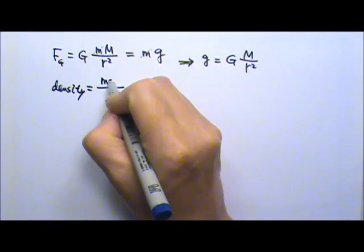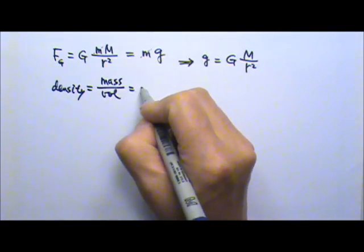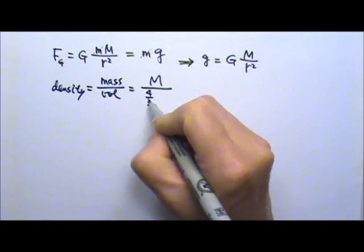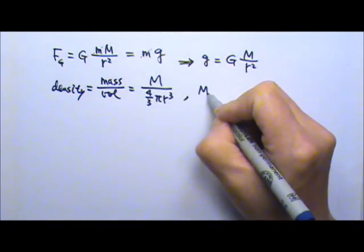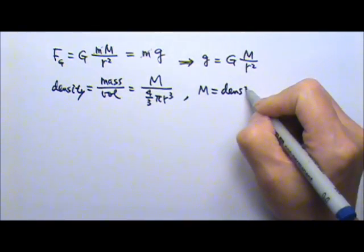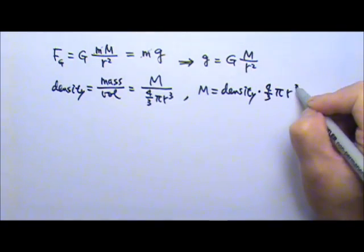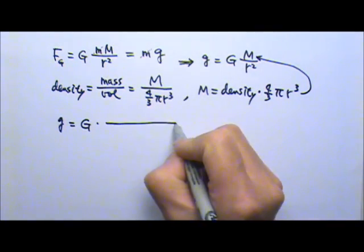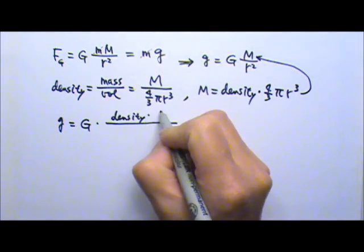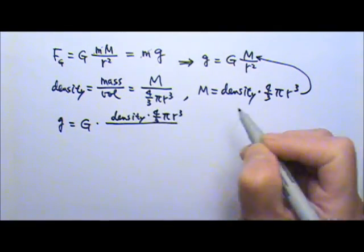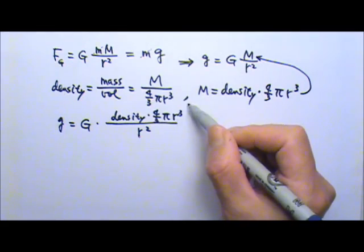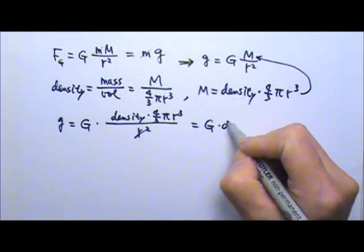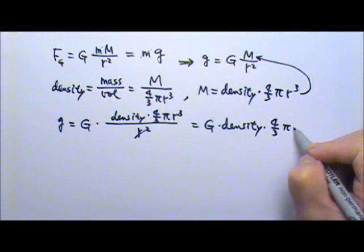The mass of the earth would be the big M. The volume of the earth would be the volume of a sphere, 4 thirds pi r cubed. Which means the mass of the earth would equal to the density times the 4 thirds pi r cubed. And we can plug this one in there. That means the little g would equal to the big G times the density of the earth times the 4 thirds pi r cubed divided by r squared. So of course the r squared here and the r squared they cancel. So this little g is the big G times the density times the 4 thirds pi times r.